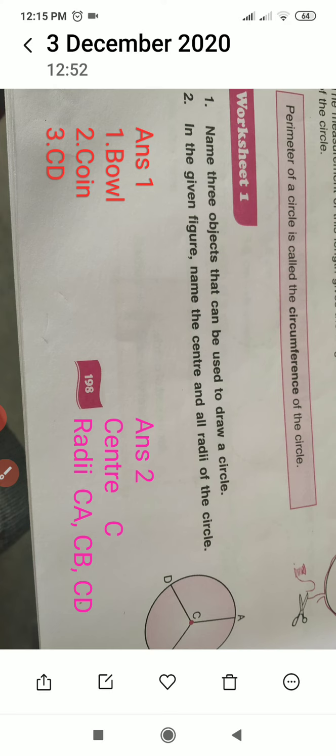Bowl, coin, CD. The bowls are circle shape. Coin is circle shape. CD is circle shape. First question.